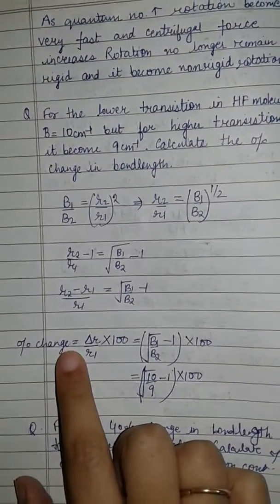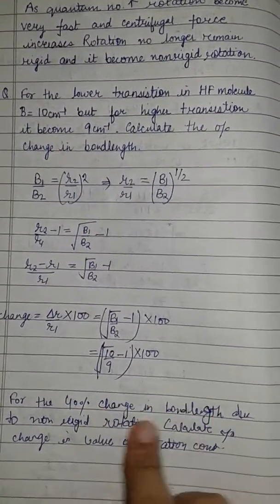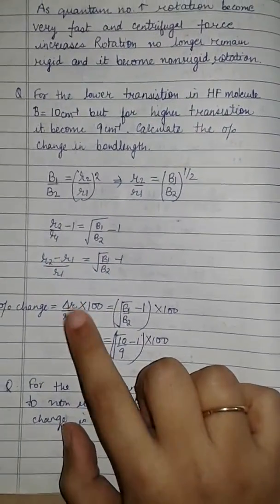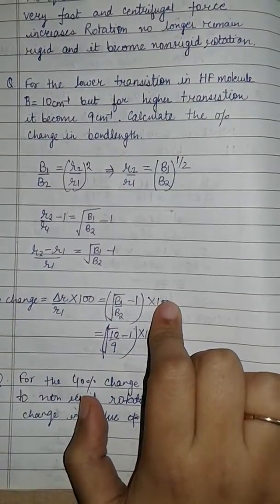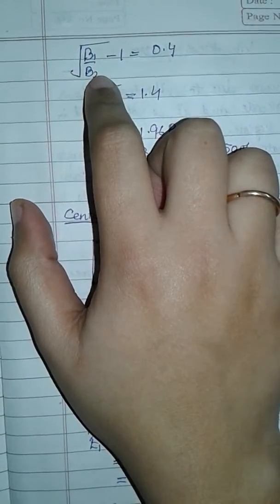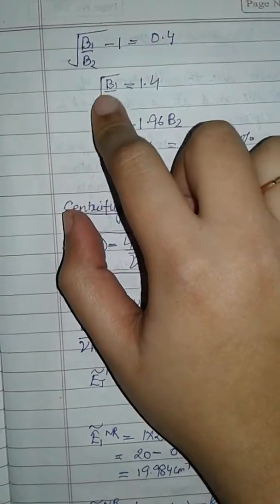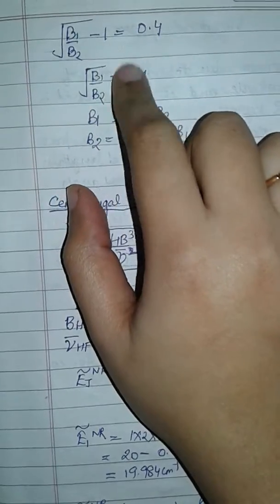Next question: calculate the percentage change in the value of the rotational constant for a 40% change in bond length due to non-rigid rotation. It is given that the percentage change in bond length is 40%, so (√(B₁/B₂) − 1) × 100 = 40, meaning √(B₁/B₂) − 1 = 0.4. Taking −1 to the right-hand side gives √(B₁/B₂) = 1.4.